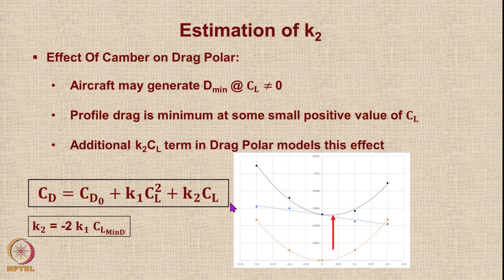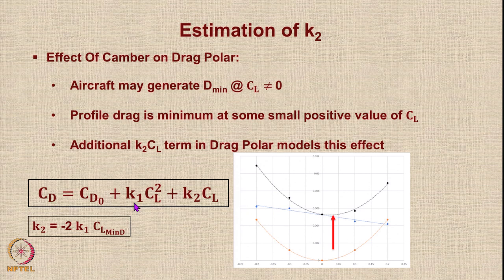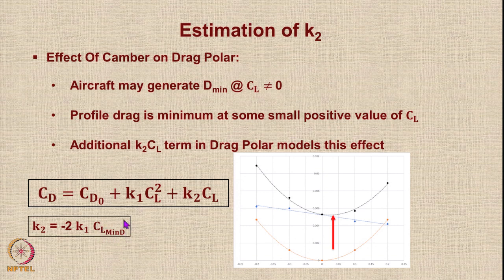If you differentiate CD with respect to CL, set dCD/dCL equal to zero, and confirm the second derivative is negative, you can derive that K2 equals minus 2·K1·CL_min_drag. So K2 can be calculated once we know the value of CL at minimum drag. We already know K1 from the previous expression, but to find K2 we need to know the CL at which drag is minimum.